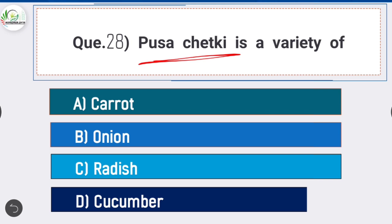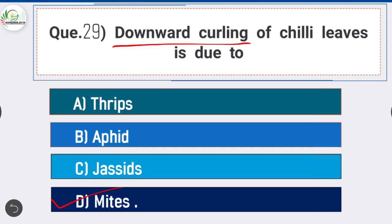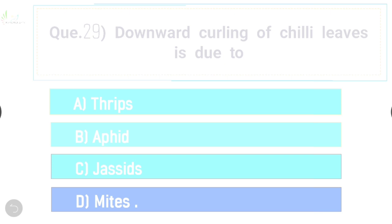Question number twenty-eight: Pusa Chetki is a variety of - answer is option C - radish. Question number twenty-nine: downward curling of chili leaves is due to - answer is option D - mites. The downward curling of chili is due to mites, and upward curling of chili is due to chili thrips.